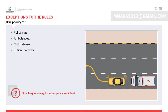Exceptions to the rules — giving way to emergency vehicles: if ambulances, firefighting engines, or police cars are seen with sirens and flashing lights, all other drivers should give way in a safe manner. Official vehicles moving in convoys also have priority.